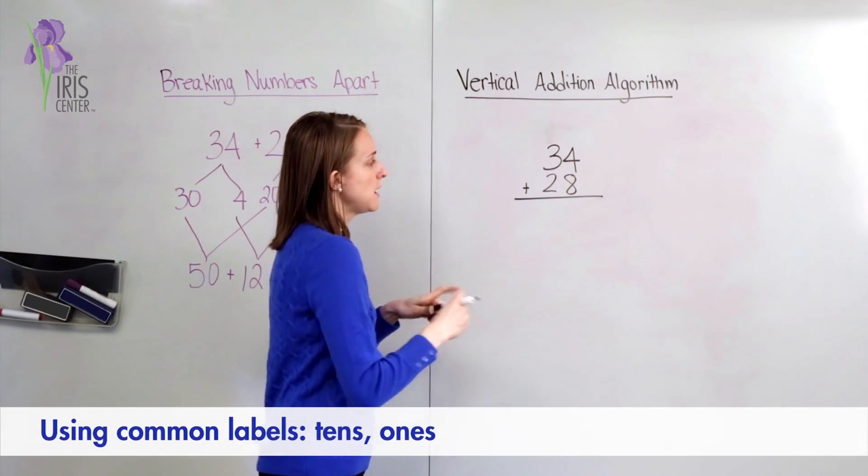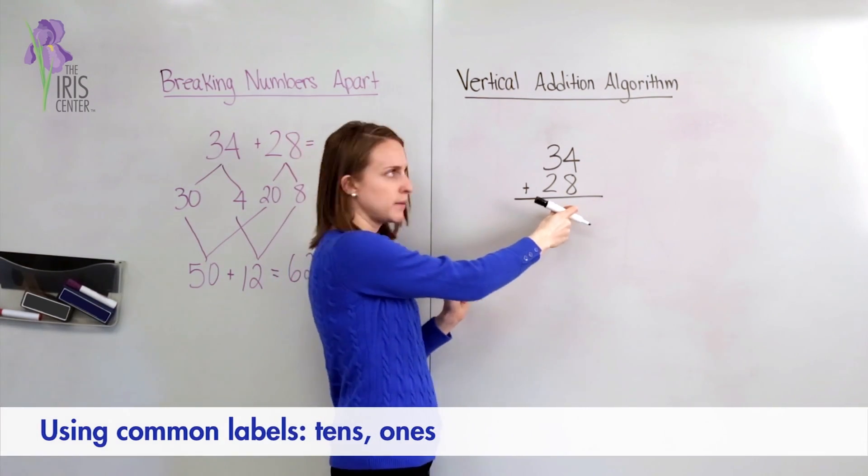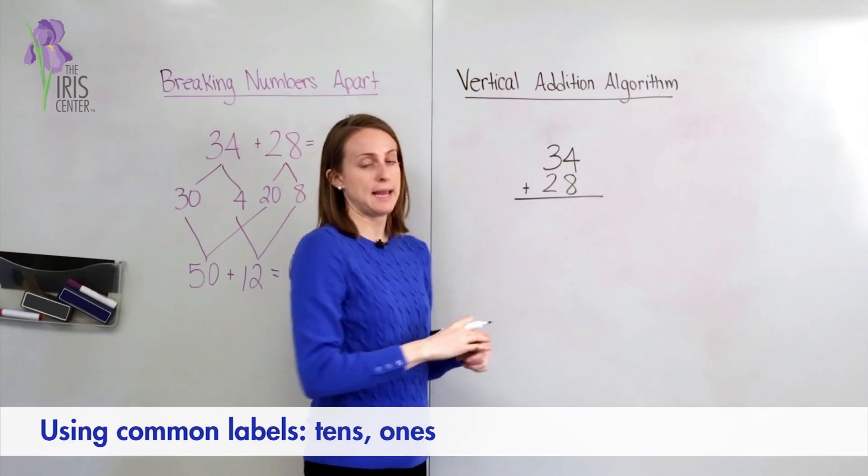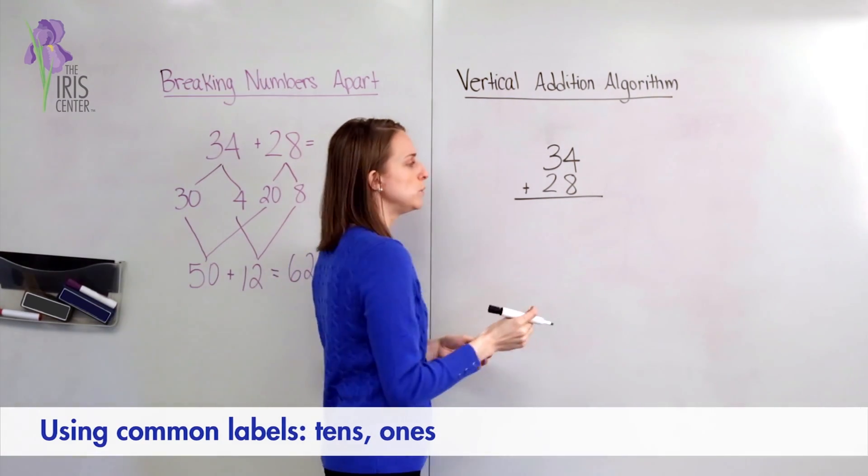So to start, I'm going to start in the ones column. I'm going to add 4 plus 8. 4 plus 8 equals 12.